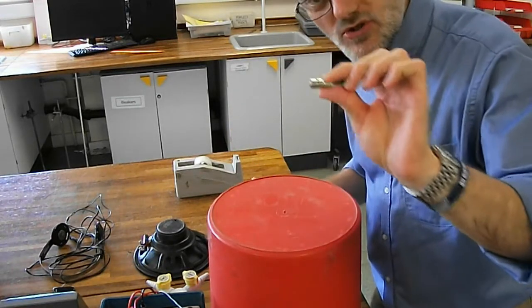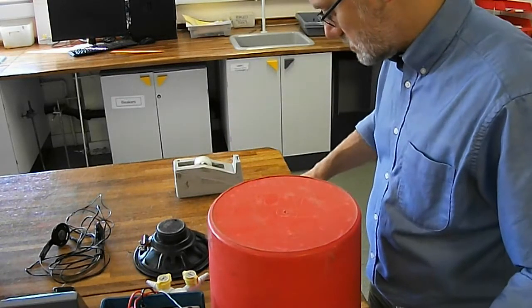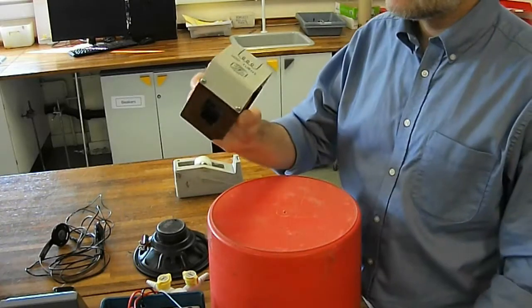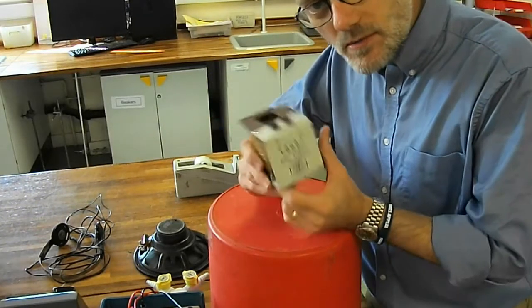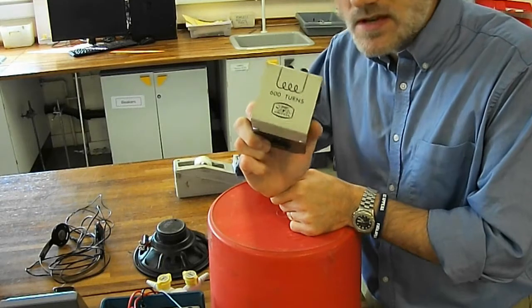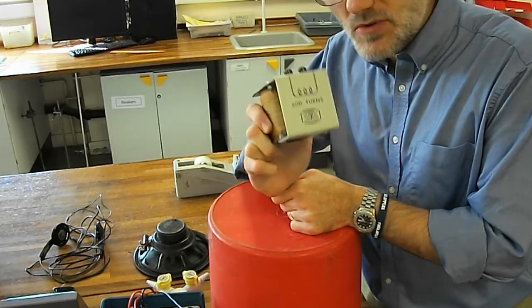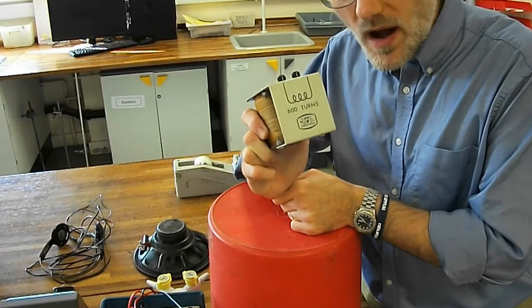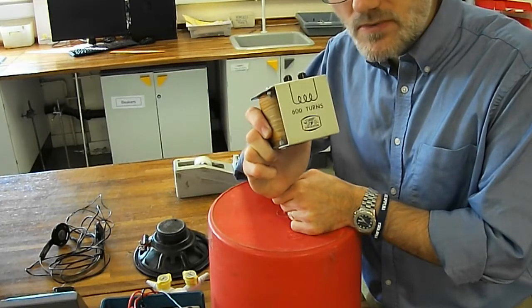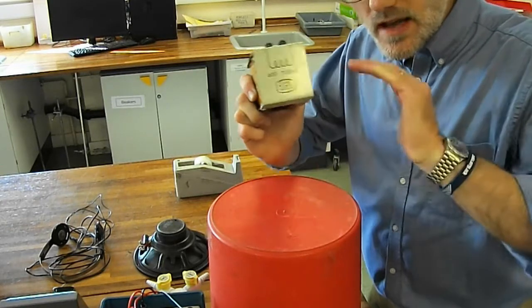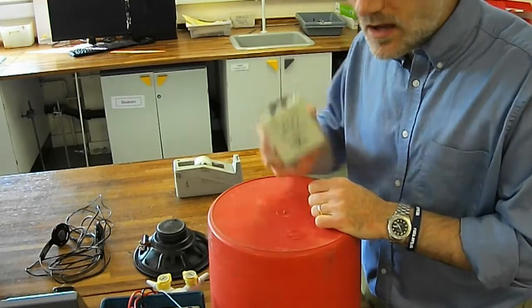I have some super strong neodymium magnets. I have taken from our transformer demonstration kits a coil with 600 turns. Now you're probably not likely to have one of these at home, but you could make a coil if you can find transformer wire. You just need to remember to sand off the varnish at the end in order to make a connection.